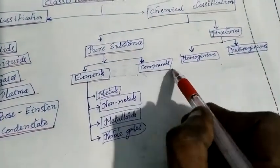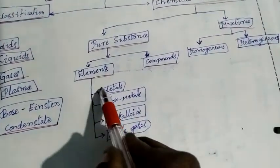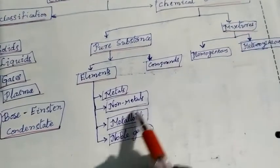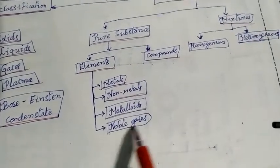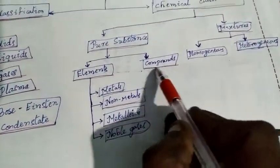In chemical classification, there are pure substances and mixtures. Pure substances are again classified into elements and compounds.